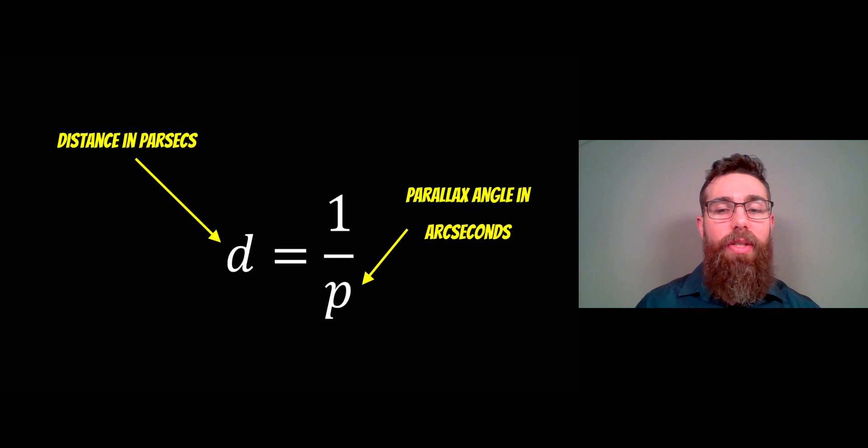Now once we've got the parallax angle the distance is just one over the parallax angle in arc seconds. We get that distance in parsecs so that's important. This assumes that it's a small angle as well so it's approximated to be a small angle that's why we can use this relationship here.